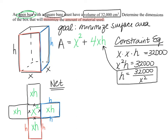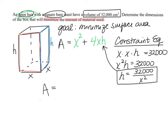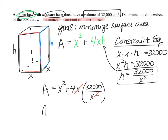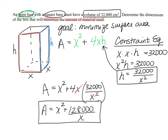We substitute H = 32,000 / X² into our surface area equation to eliminate one variable. So area equals X² plus 4X times (32,000 / X²). Simplifying, one X cancels with one X in the denominator, leaving us with A = X² + 128,000 / X. This is our area model — one input, one output — a function we can actually minimize.